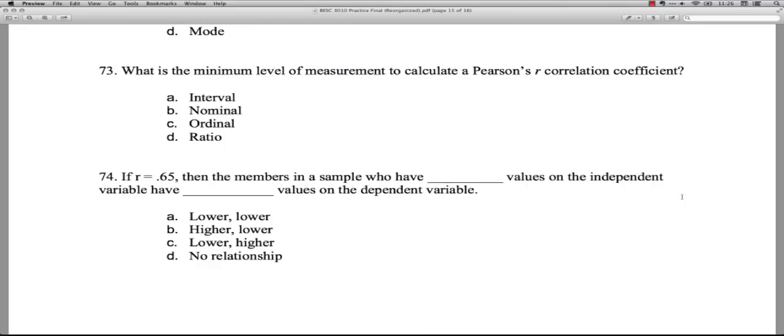Question 74: If R, that's the correlation coefficient, equals 0.65, then the members in the sample who have blank values on the independent variable have blank values on the dependent variable. Okay, it's a positive association. And it's non-zero. So people who are lower on one would be lower on the other. That's A. That's correct. And, again, that's tricky because when people look at positive correlations, they think that means higher and higher. Well, lower and lower is just the other side of the coin.